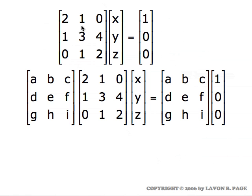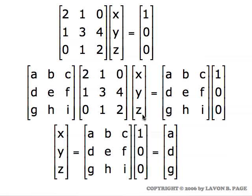We're taking this matrix equation and multiplying both sides on the left by that inverse matrix. Since we're assuming this is the inverse of the coefficient matrix, when we multiply the inverse times the coefficient matrix the product will be the identity matrix, which multiplied times the column x, y, z just gives us x, y, z. So the entire left side collapses into just the column x, y, z.